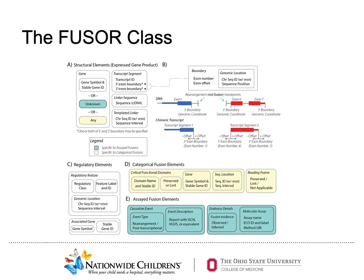Additionally, Fuser covers both the structural and regulatory elements that comprise fusion events, as you can see on the slide. These structural elements include the gene symbol and associated HGNC ID, transcript ID, and data describing a linker sequence, if present. The regulatory elements, in the context of categorical fusions, include the class, such as the functional domain, the ID, and genomic location. Although the use case of certain elements is specific to the type of fusion being understood, Fuser is able to model a wide range of fusion events.